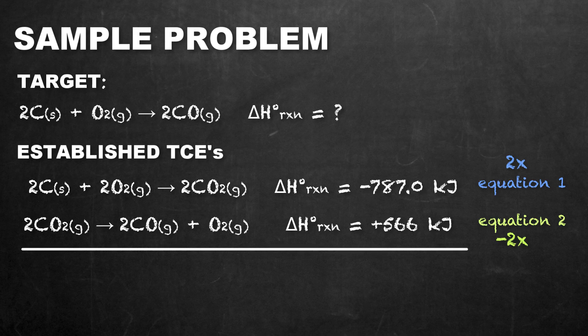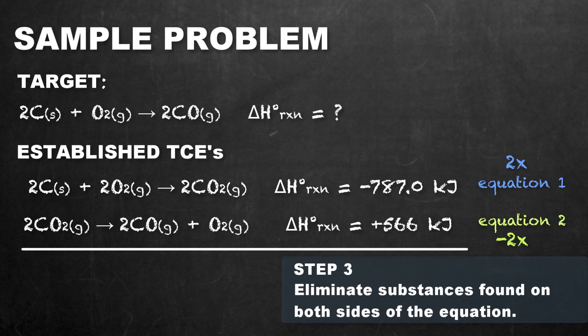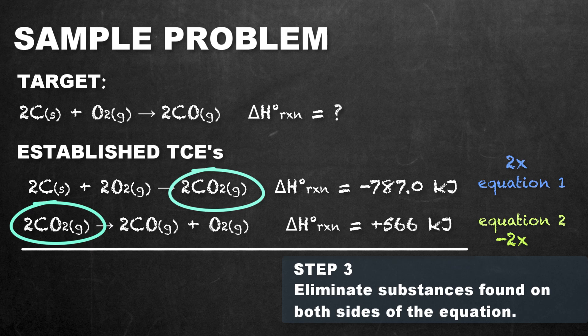The full name for Hess's Law is Hess's Law of Heat Summation, which allows us to add up everything — what's on the reactant side, what's on the product side, and the overall enthalpy changes. Before doing that, notice that we have two moles of carbon dioxide on the reactant side from equation 2 and two moles of carbon dioxide on the product side from equation 1, so these cancel each other out.